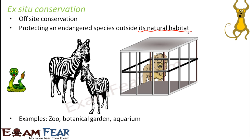Other examples of ex situ conservation include botanical gardens, where different varieties of plants can be conserved. You can see big botanical gardens in cities like Bangalore and Rooty, where a large variety of different plants are conserved in that area. Aquarium is another example of ex situ conservation.